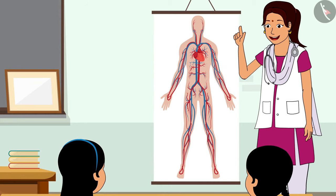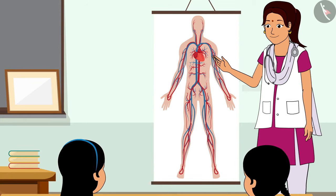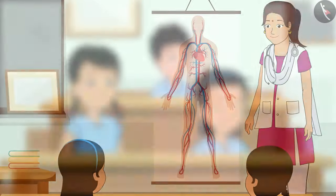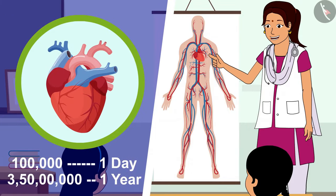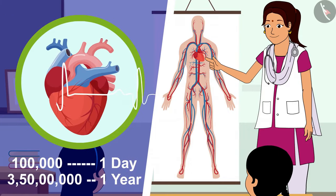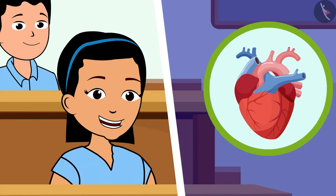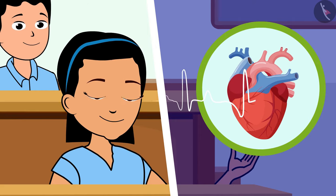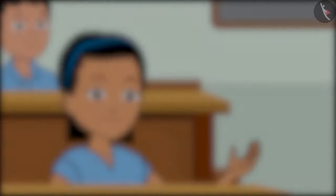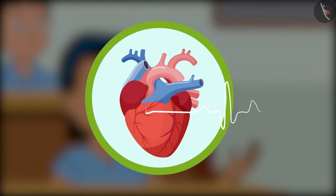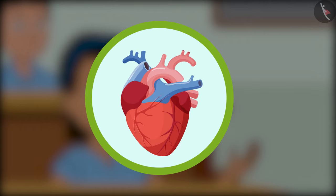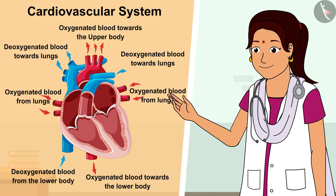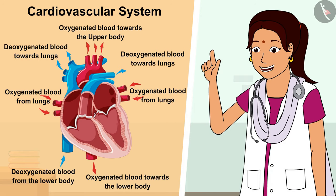Do you know, children, how many times does our heart beat in a day? No, Didi. Our heart beats one lakh times in a day! Our heart does a lot of hard work — no doubt it is the strongest part of our body. Yes, you are right. The heart works like a pump, and because of this pump, blood flows smoothly to all the organs of our body.